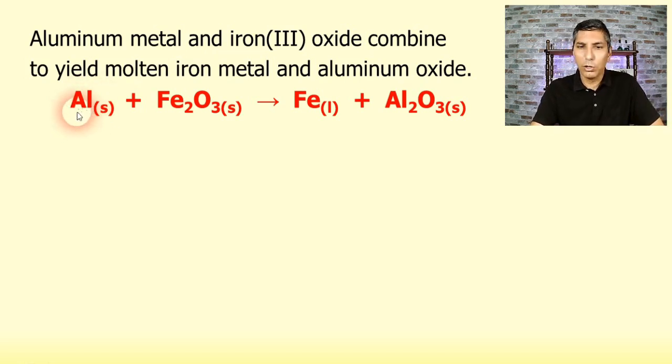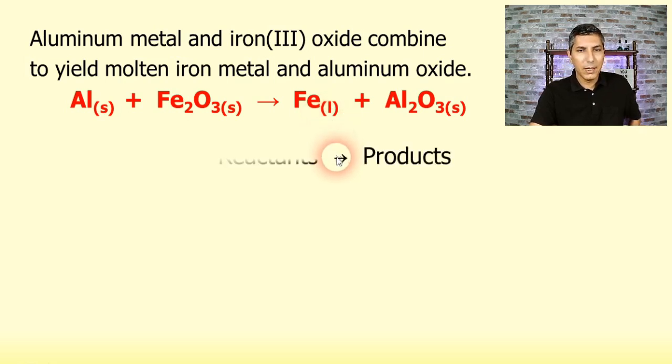Al is for aluminum. Fe2O3 is for the iron three oxide. The Fe is for the iron metal. And the Al2O3 represents aluminum oxide. And we have a couple of other symbols as well. We have the S, which stands for solid. We have an L, which stands for liquid. G would stand for gas, if we had a gas.